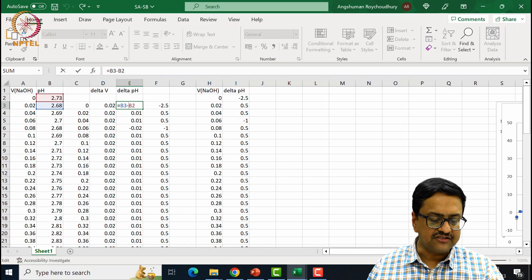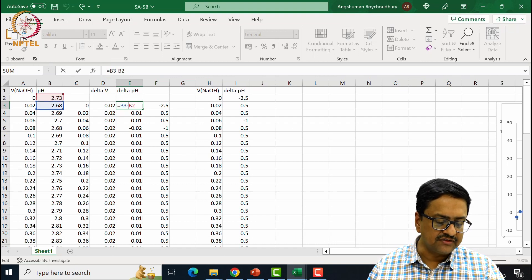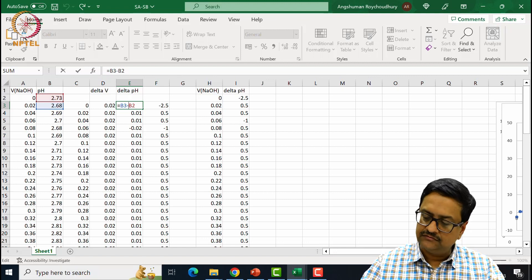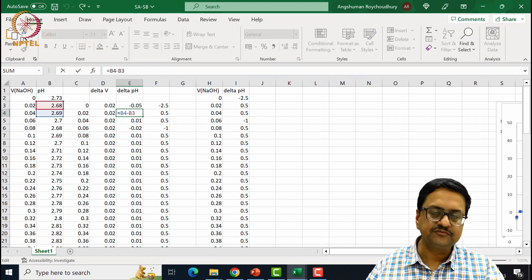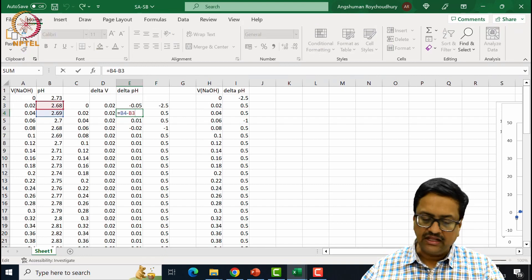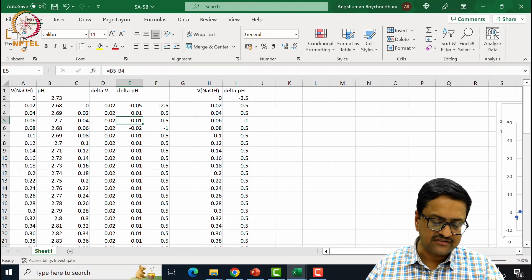if you look at it, delta pH means pH of reading 2 minus pH of reading 1. Again, in the next row, it is pH of reading 3 minus pH of reading 2. So like that in excel, we have calculated delta pH.